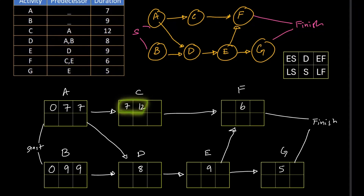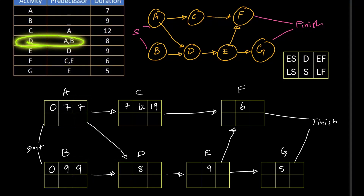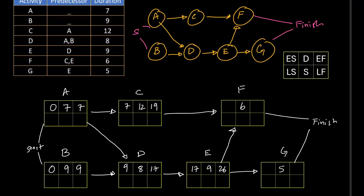We add the early start of C and its duration: 7 plus 12 equals 19. For D we have two options — early finishes of 9 and 7. Since D starts after the completion of both A and B, we take the largest number, which is 9. Adding duration: 9 plus 8 equals 17. This 17 goes to D's early finish box. Then E's early start is 17, and the sum is 17 plus 9 equals 26.